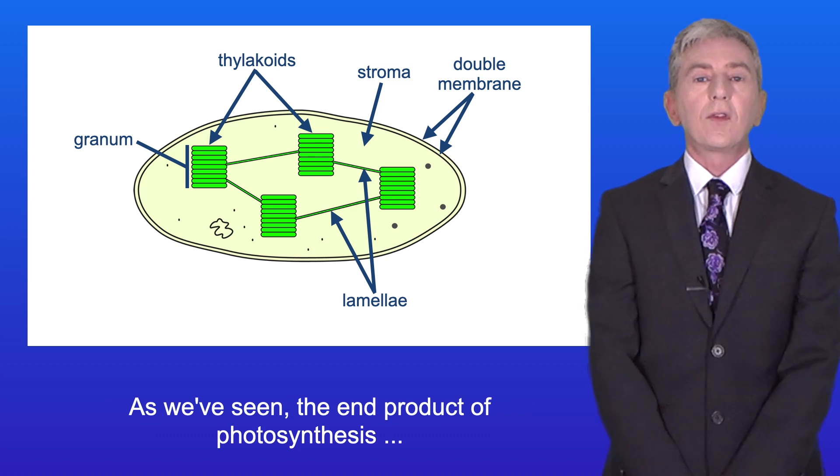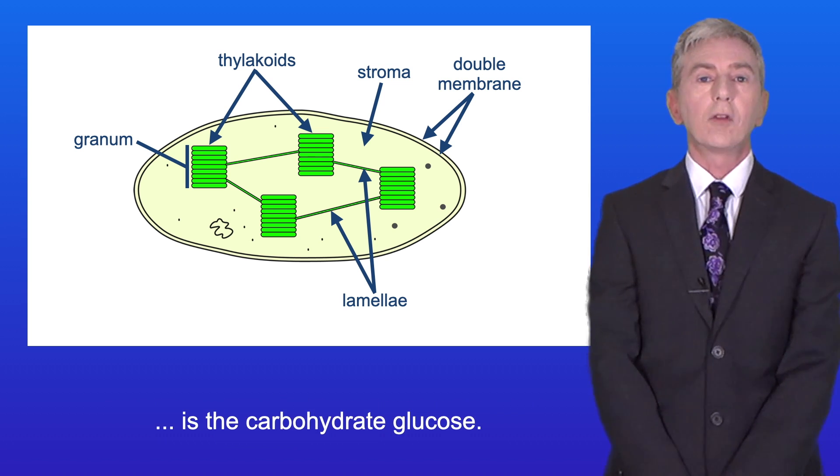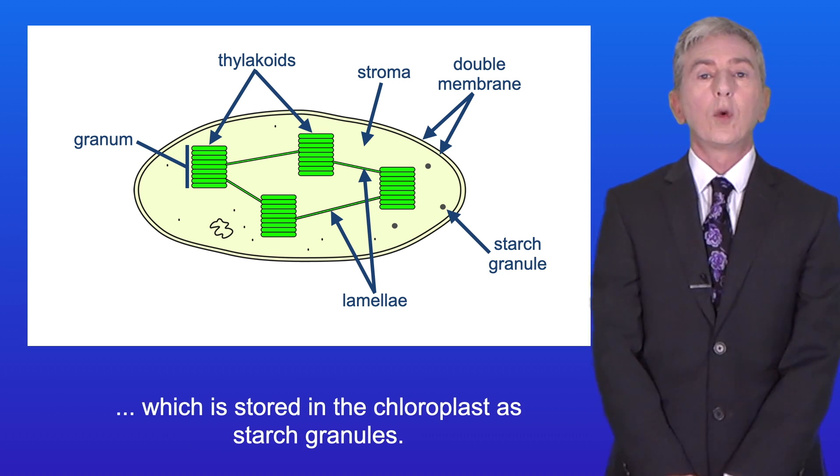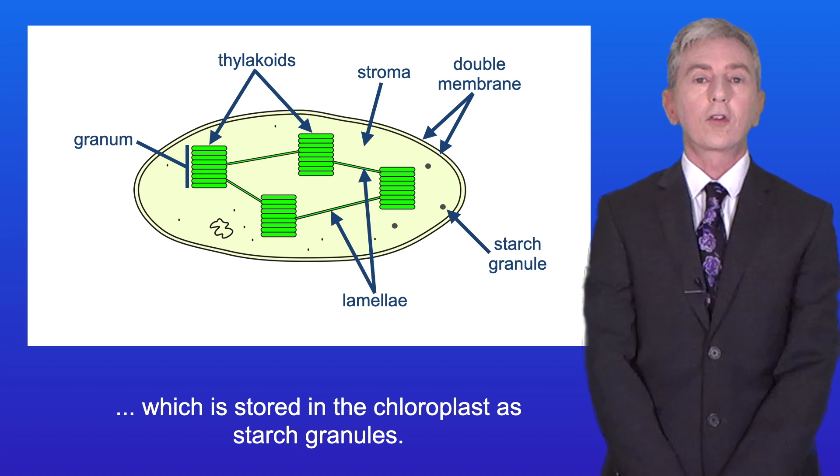Now as we've seen, the end product of photosynthesis is the carbohydrate glucose, and this glucose can be converted to the polysaccharide starch, which is stored in the chloroplast as starch granules.